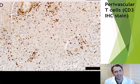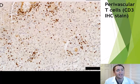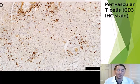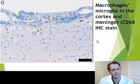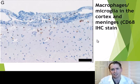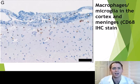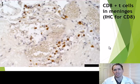This is a CD3 immunohistochemistry stain — CD3 is a marker of T lymphocytes — and just like in the white matter, we can see extensive infiltrates of T cells around the blood vessels, a perivascular configuration. MS is a perivenular disease. This is a CD68 stain, a marker of macrophages and also the resident macrophages of the CNS, the microglia, and you can see very extensive cells quite superficially — not just within the cortex, but also within the meninges, the coverings of the brain.